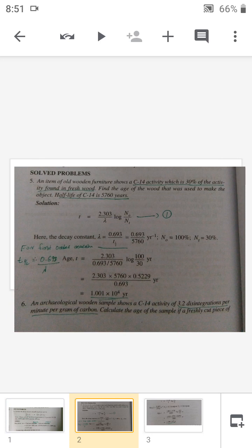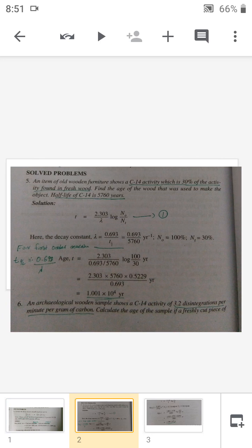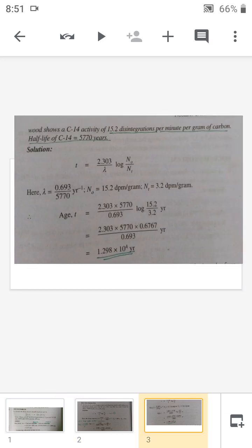Next question: an archaeological wooden sample shows a C-14 activity of 3.2 disintegrations per minute per gram of carbon. Calculate the age of the sample if a fresh cut piece of wood shows a C-14 activity of 15.2 disintegrations per minute per gram of carbon. The half-life of C-14 is 5717 years.